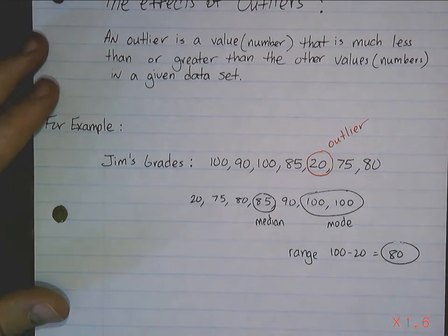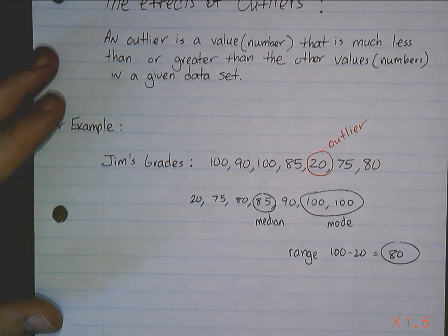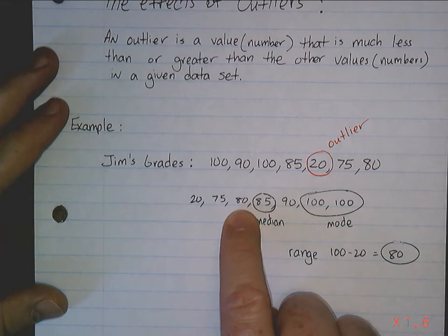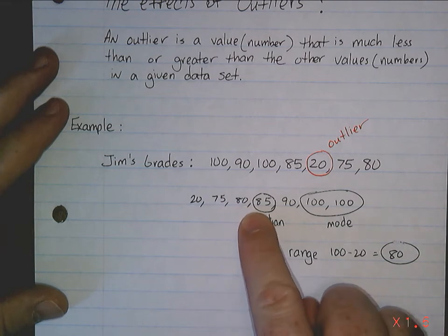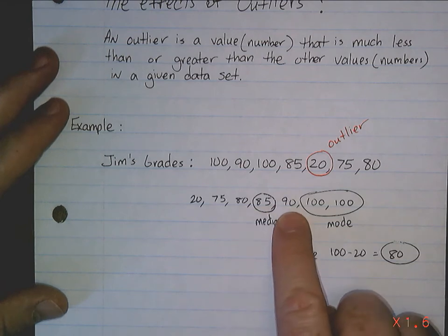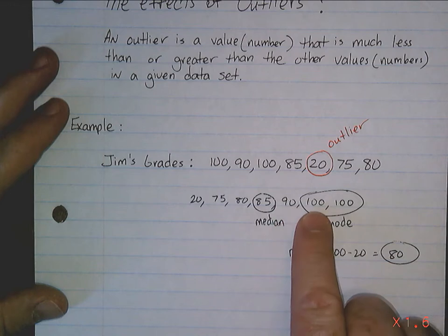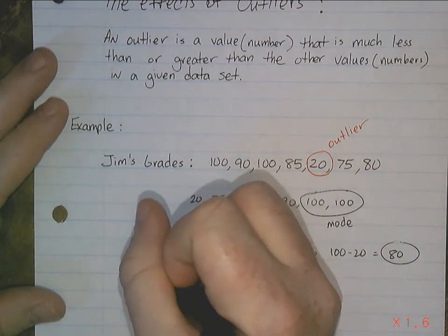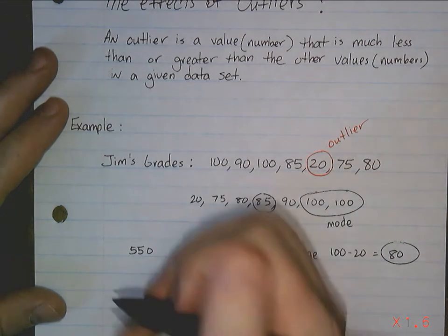So let's take a look at the mean now. If we add this all up, this is going to be 95 plus 80 is 175. 175 plus 85 is going to be 260. 260 plus 90 is 350, 450, 550. So 550 is your total. You add them all up. Divide by 7 because there's 7 numbers.